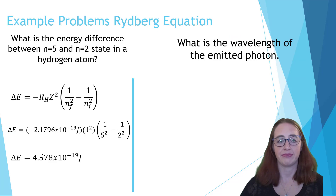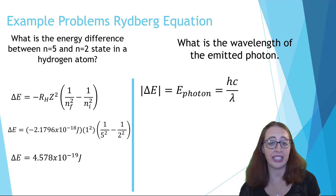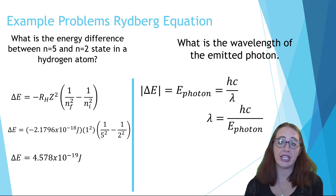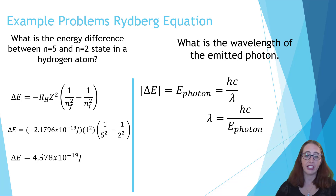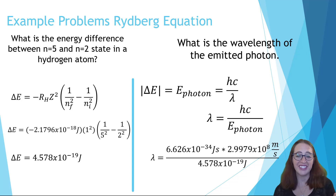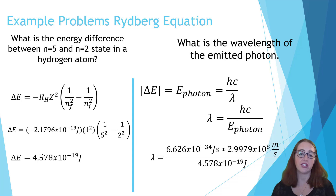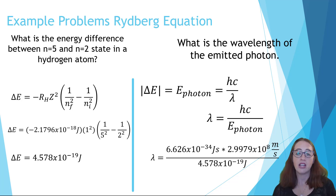Now we can find the wavelength. The magnitude of delta E equals the energy of the photon, and the energy of the photon is related to its wavelength by hc over lambda. We rearrange the equation to get lambda alone, then fill in our constants and energy to get our wavelength. Because all units cancel to meters, the result will be in meters. Very often these problems will also ask you to convert to another unit like nanometers, so always check your units at the end—Canvas is completely unforgiving of unit mistakes.